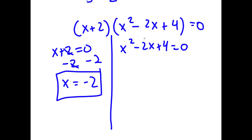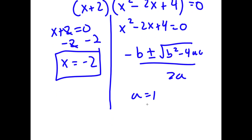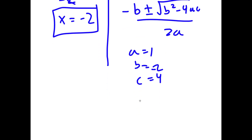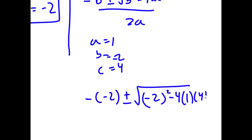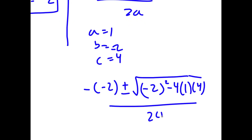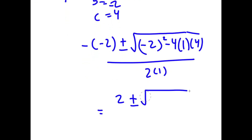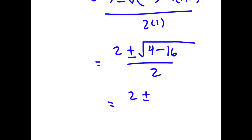Now to solve x squared minus 2x plus 4, I can do this in two ways. My first method is the quadratic formula, which is negative b plus or minus the square root of b squared minus 4ac all over 2a. In this case, a is 1, b is negative 2, and c is 4. So I have negative negative 2 plus or minus the square root of negative 2 squared minus 4 times 1 times 4, all over 2a. This is equal to 2 plus or minus the square root of 4 minus 16, all over 2, which is equal to 2 plus or minus the square root of negative 12 over 2.